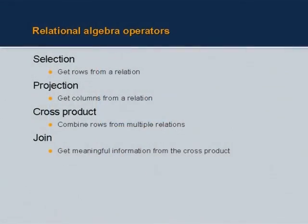What are the relational algebra operators? There are four operators. Selection — in plain English, it means getting rows from a relation. If your relation has 5000 students and you want to select some 200 students, the basis on which you select is called the selection predicate or condition. That operator is called the selection operation.